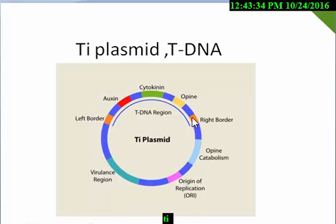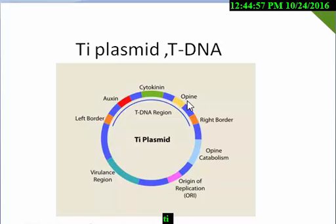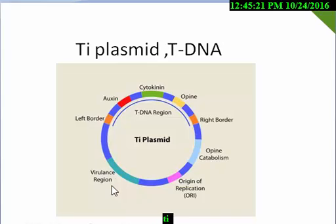What is contained in the T-DNA region? That is auxin, cytokinin, and opine. Auxins and cytokinins are hormones required in the T-DNA region. Opine is used as a nutrient for the bacterium. These two borders — left and right — are where we cut the T-DNA region. The virulence region contains the genes to cut at these two borders.